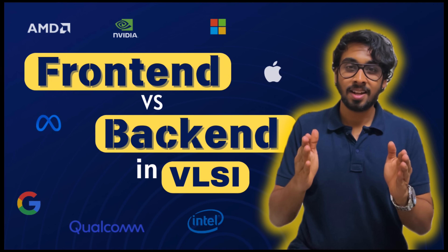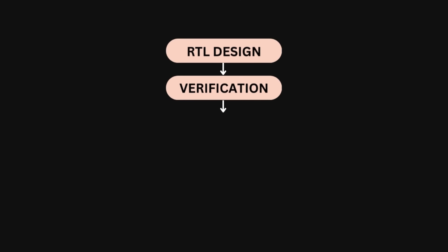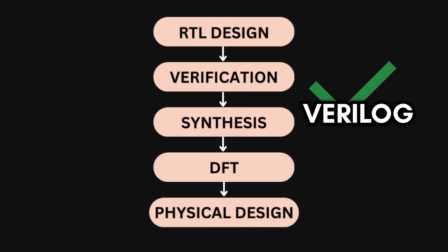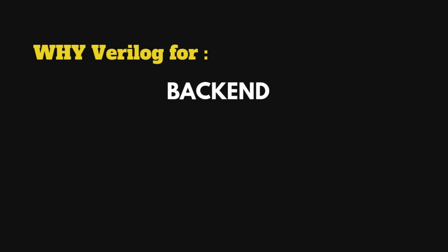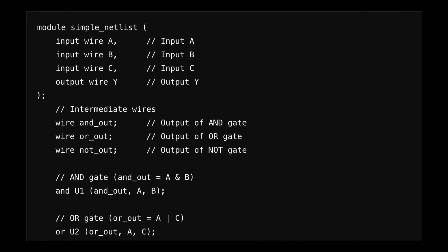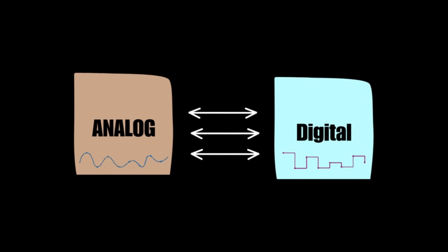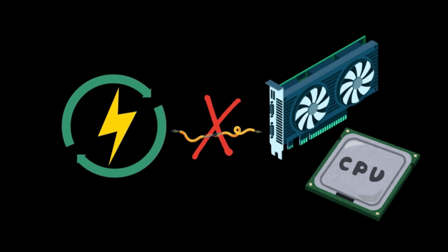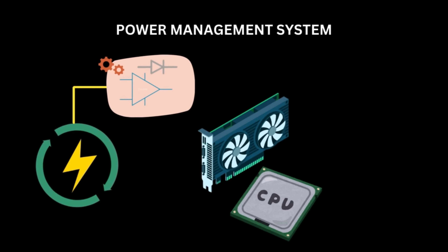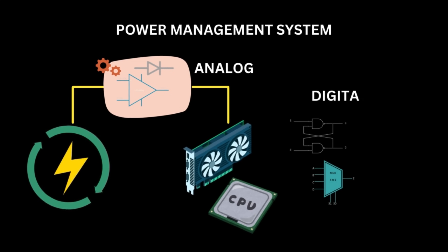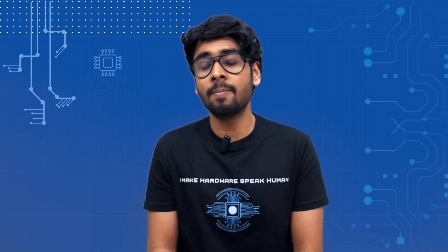From RTL design to physical design, you need to know Verilog. For front-end roles it's obvious, but why do we need Verilog for backend, analog, and embedded roles? Backend starts after receiving the netlist, which is in Verilog, so you need at least a basic understanding. In analog, you cannot have anything 100% analog in today's world — for example, a power management system for CPUs uses a voltage regulator that is 100% analog but interacts with a digital system, so you need Verilog to understand it.